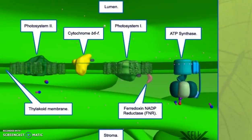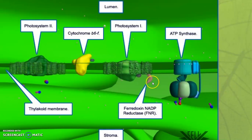Here is our thylakoid membrane. The stroma is here, the lumen is up here. In this picture we have Photosystem II, Cytochrome B6F, Photosystem I, FNR, and ATP synthase. I'm showing you this to orient you. Plants have millions of chloroplasts, and embedded within the membranes are trillions of these key complexes. We're just looking at one, but remember this would be times a trillion.